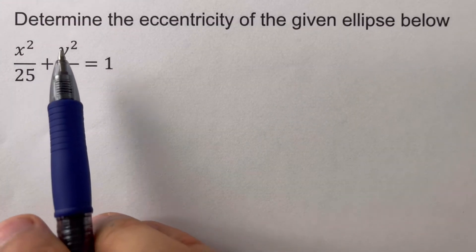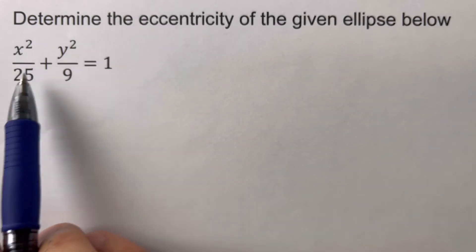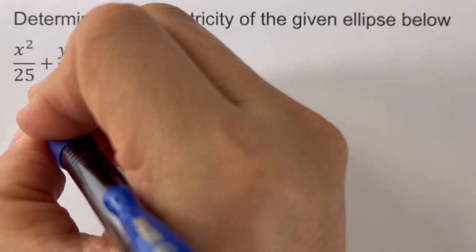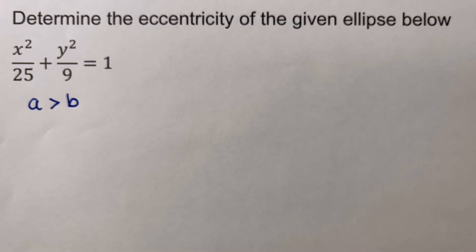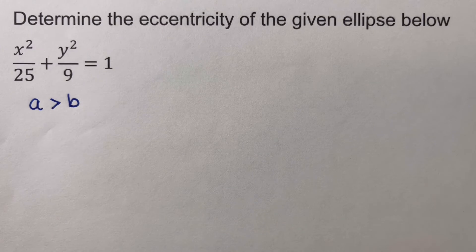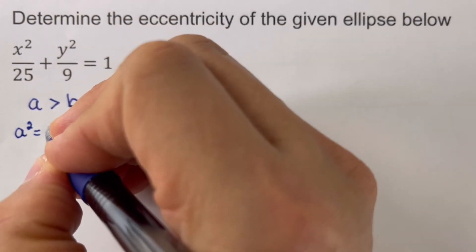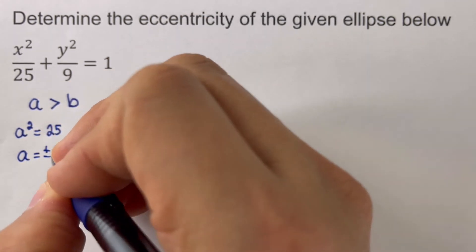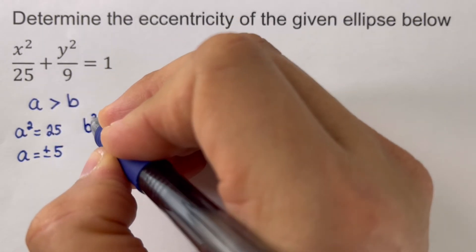Determine the eccentricity of the given ellipse. For an ellipse, our value for a is always greater than b. In this case the two denominators are 25 and 9, so 25 is bigger than 9, so we can say that a² = 25, and therefore a = ±5.